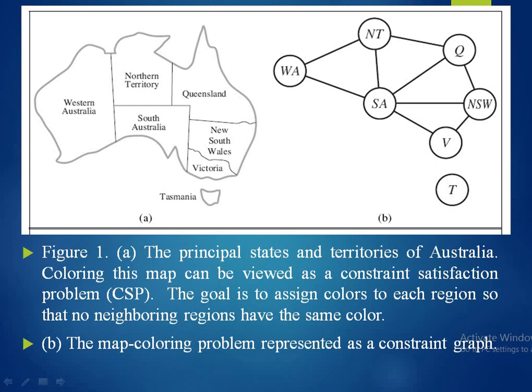The set of variables is X = {WA, NT, Q, NSW, V, SA, T}. For Western Australia the variable is WA, for Northern Territory it is NT, for Queensland it is Q, for New South Wales it is NSW, for Victoria it is V, for Tasmania it is T, and for South Australia it is SA. The principal states and territories of Australia are shown, and colouring this map can be viewed as a constraint satisfaction problem.